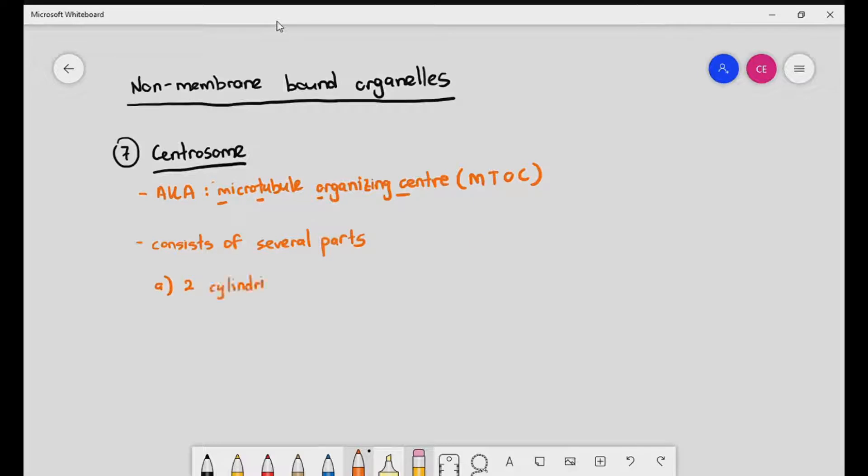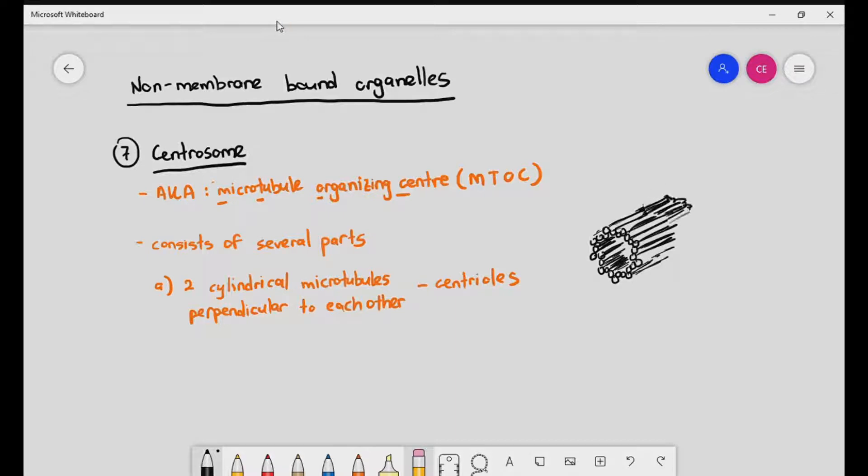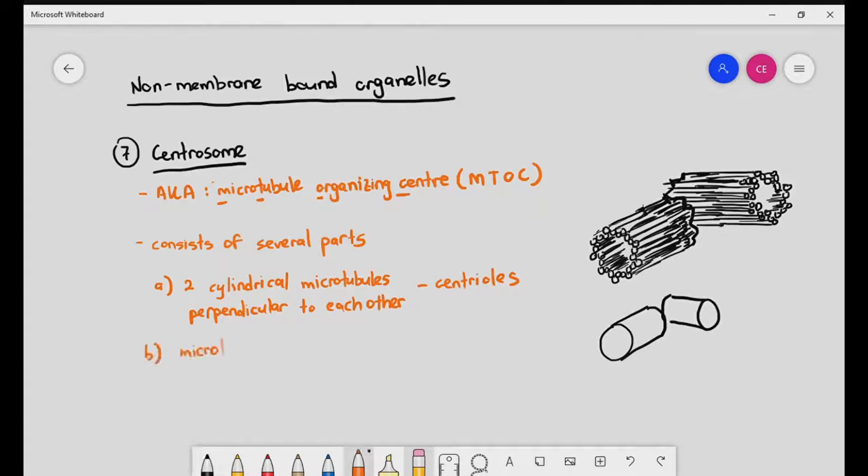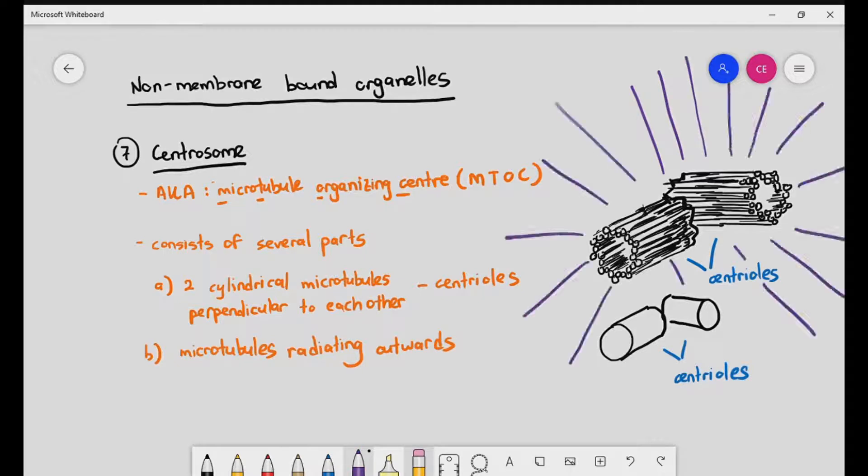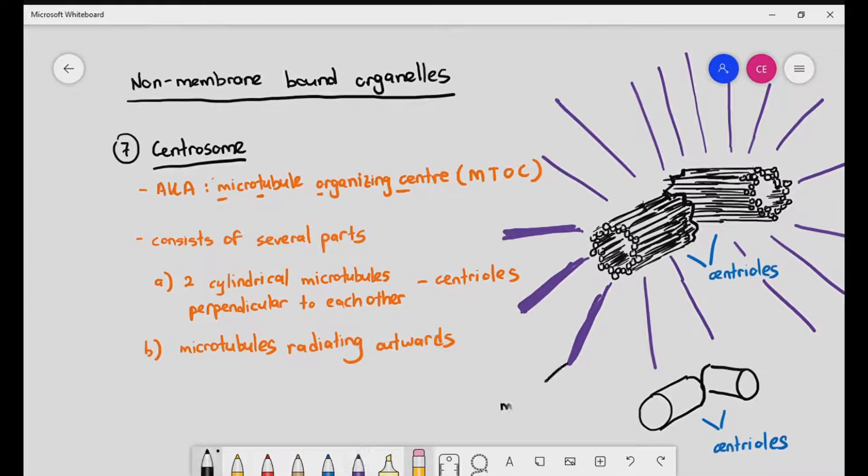There are a few things that we're going to have to break down. The centrosome itself, as a structure within the cell, consists of several parts. It is two cylindrical microtubules perpendicular to each other. And these two cylindrical structures are referred to as centrioles.